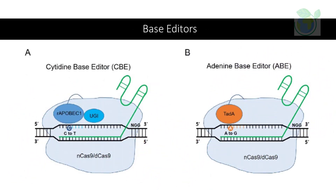Two major classes of base editors have been developed: cytidine base editors, or CBEs, allowing C to T conversions, and adenine base editors, or ABEs, allowing A to G conversions. This positions base editing as a promising therapeutic strategy for genetic diseases caused by point mutations, such as many blood disorders, and it may be more effective than approaches based on homology-directed repair, which is moderately efficient in hematopoietic stem cells — the target cell population of many gene therapy approaches.